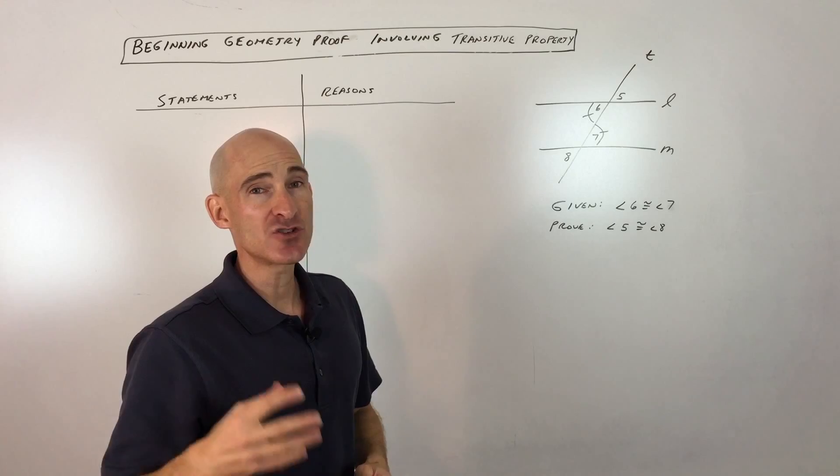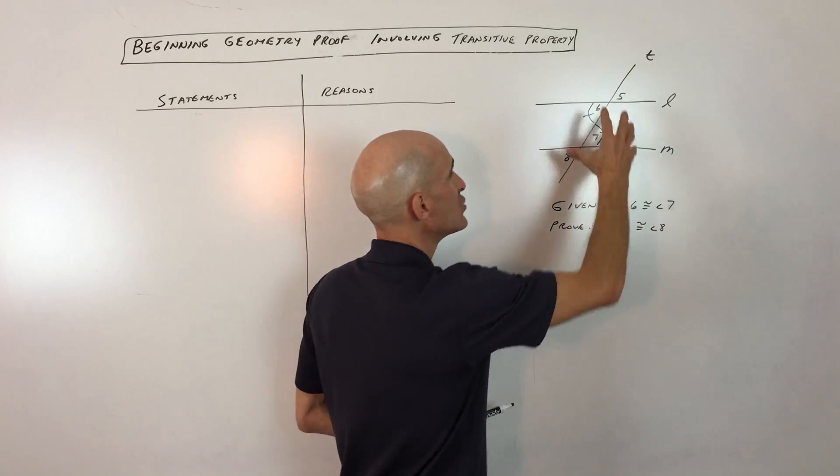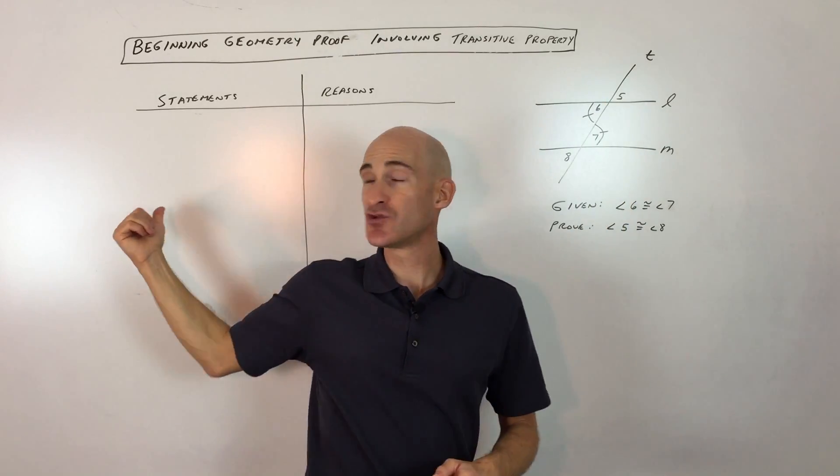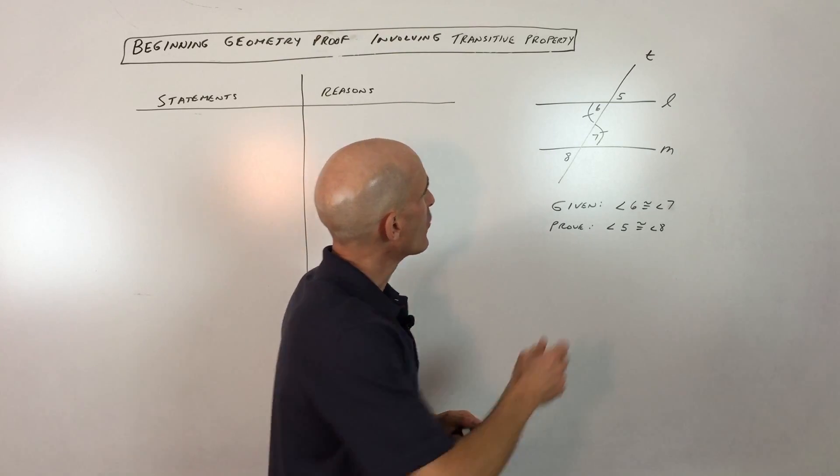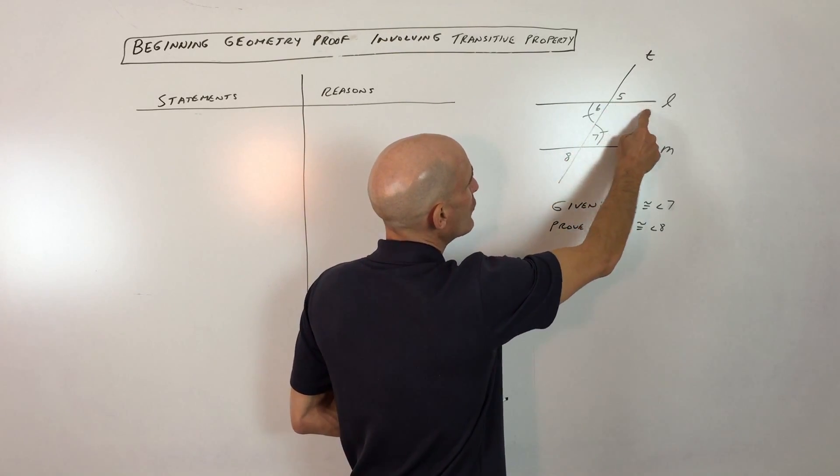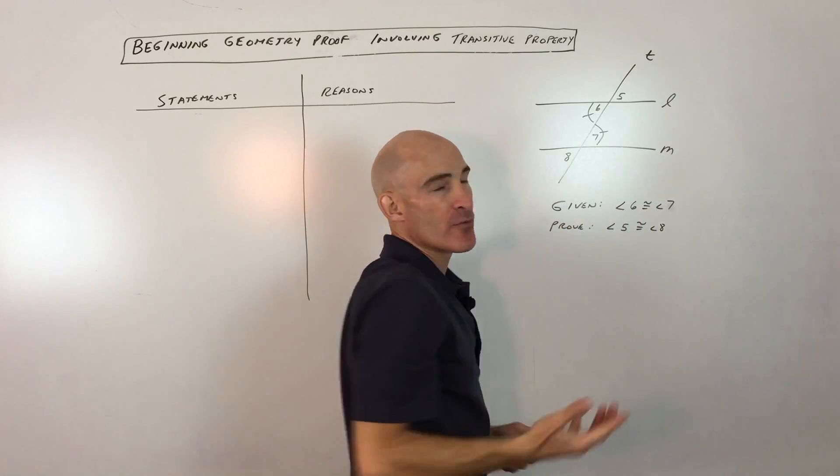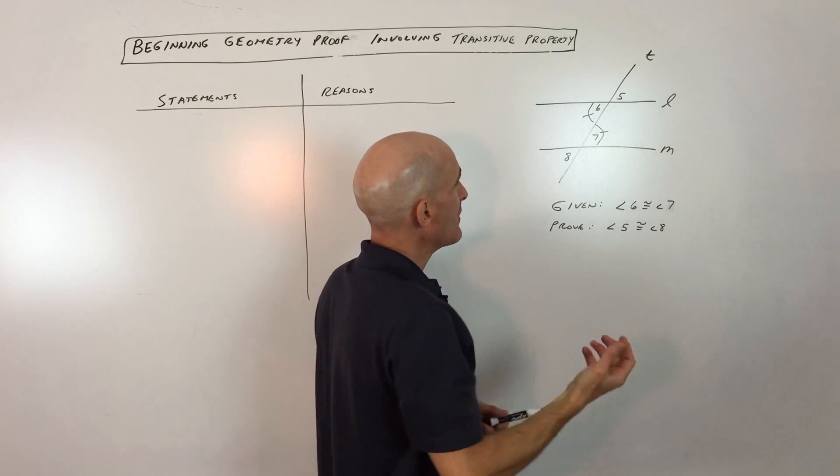The second thing that I do is I try to figure out how I'm going to prove this using the diagram before I even get into the two columns over here on the left. And let's take a look here. Well, it looks like we don't know that lines L and M, we don't know if they're parallel or not. But in this particular proof, there's different ways to do it.